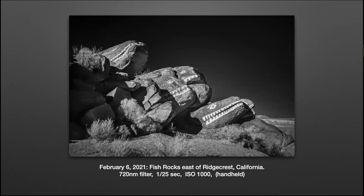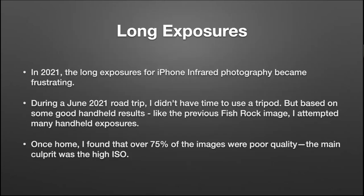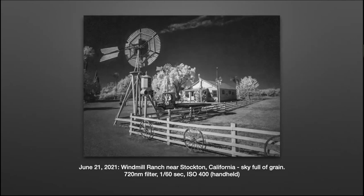I started trying to do some handheld shots — this is the fish rocks up by Ridgecrest, 1/125th of a second. Even though the ISO got up to a thousand, the exposure was pretty straight and results were good. Right after that I left on a long road trip, and because I was making several stops a day, I didn't have time to use a tripod. So I resorted to doing a lot of handheld infrared photography with my iPhone 11, and most of the results were poor. This windmill ranch near Stockton, California — the sky is just full of grain. Shooting through the equivalent of a hot filter in the iPhone plus the 720 nanometer infrared filter handheld just didn't work.